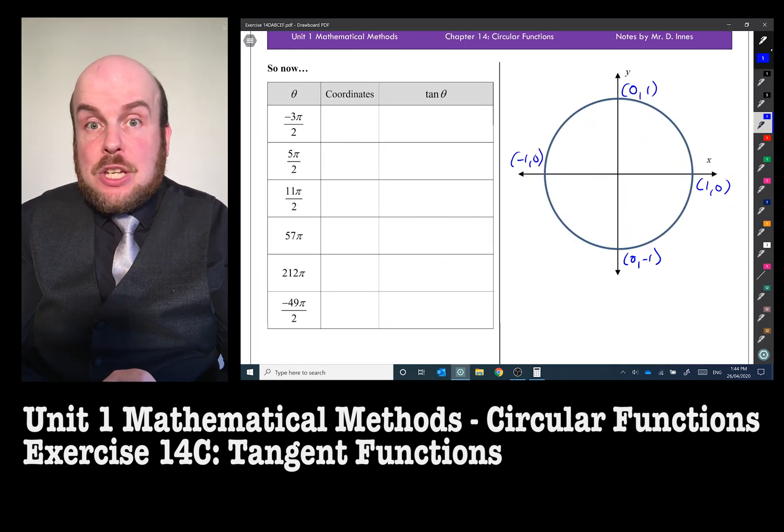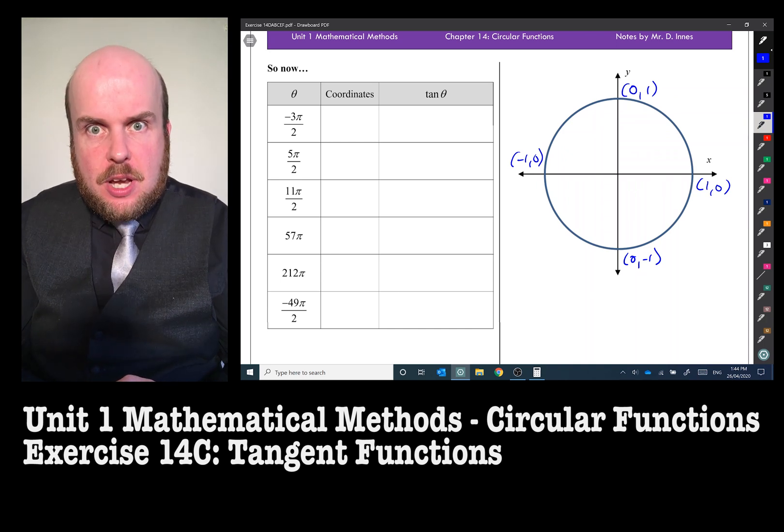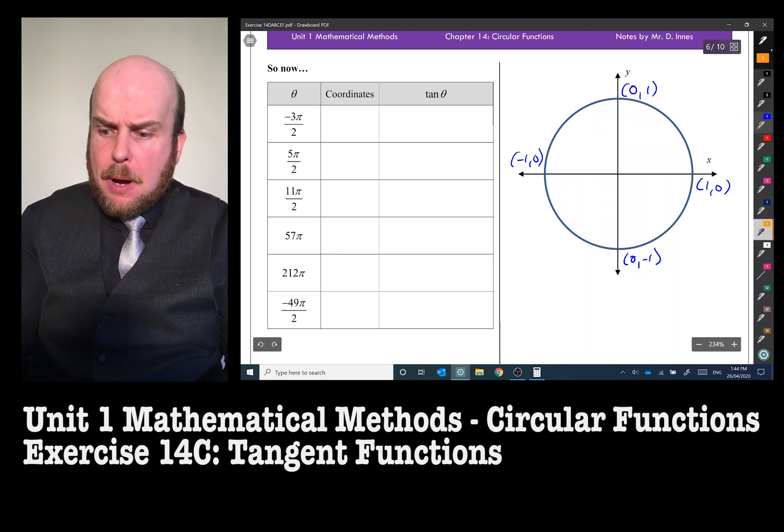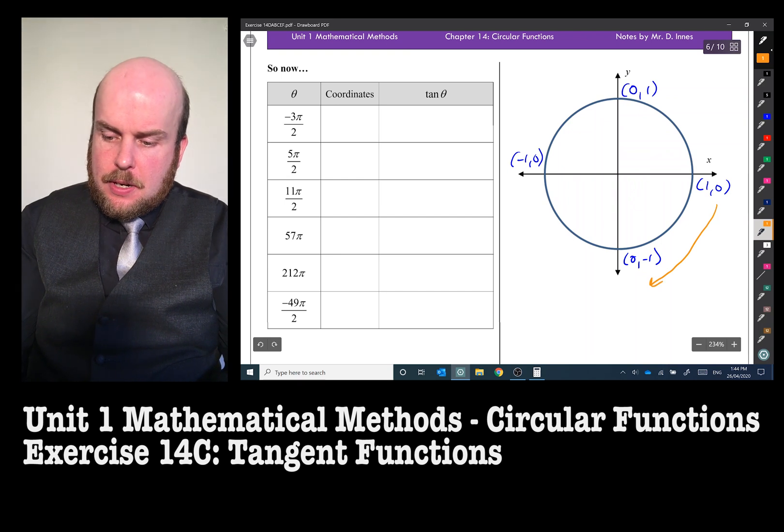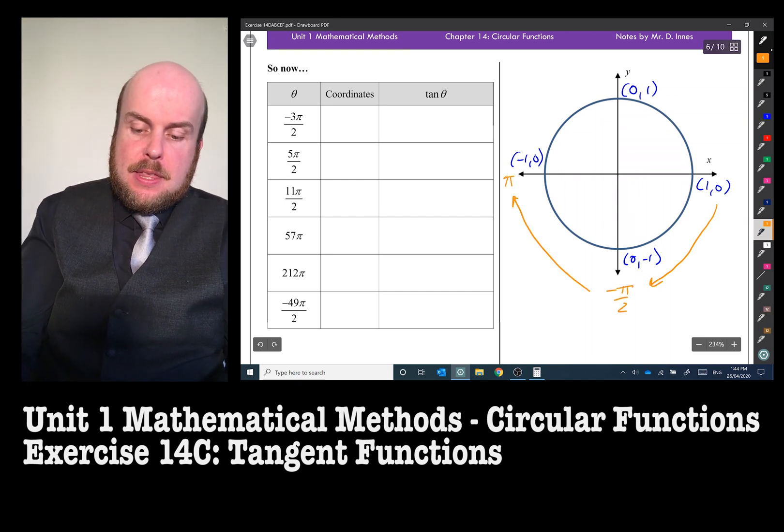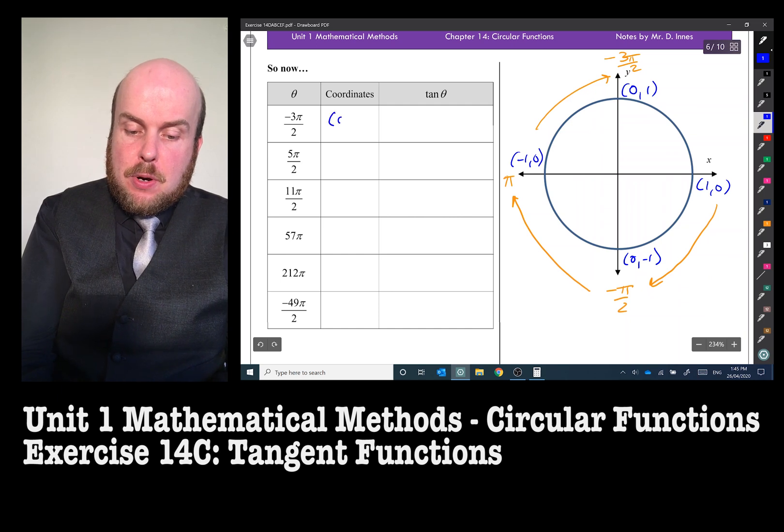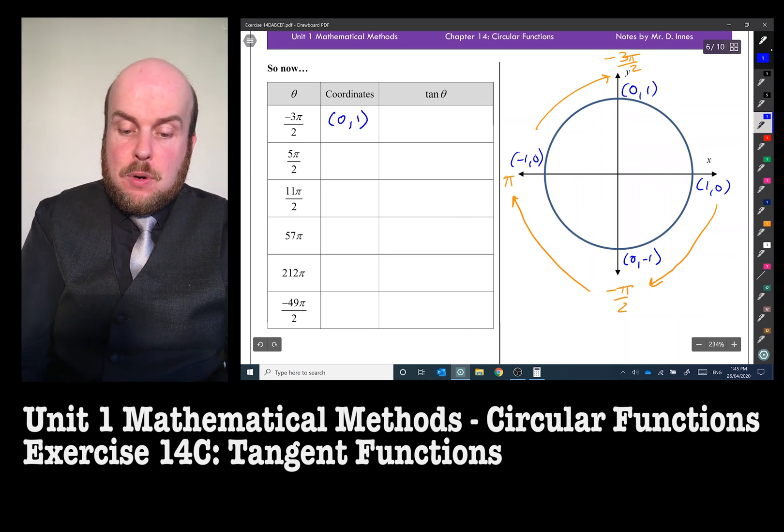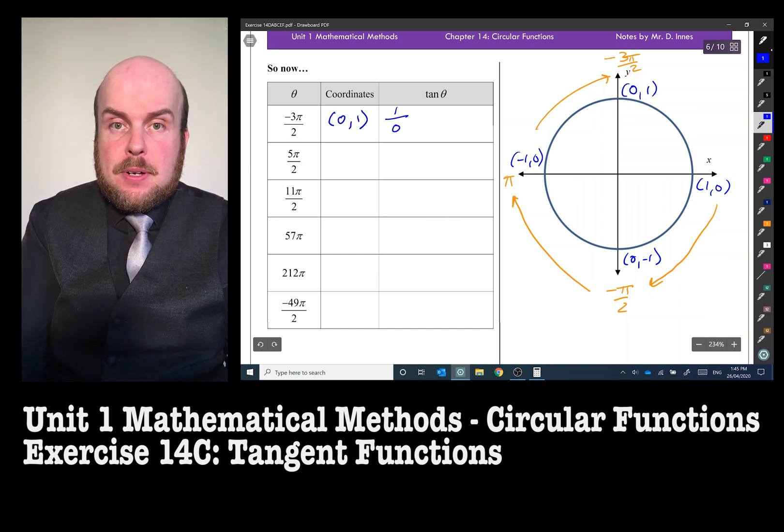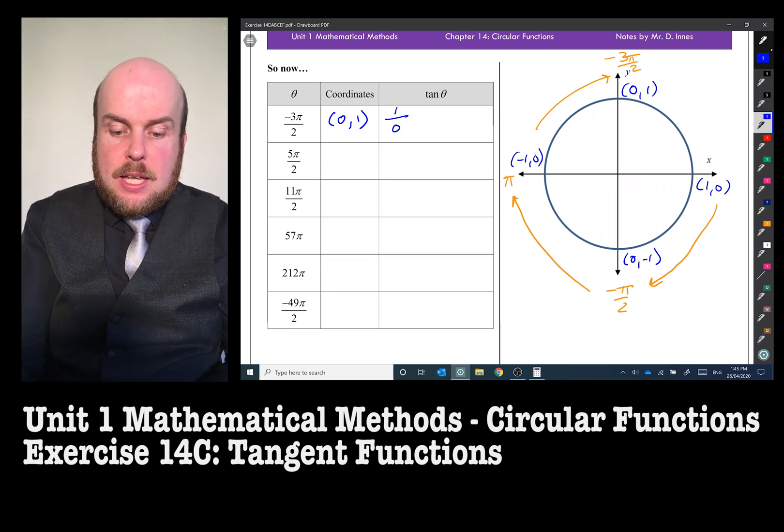Now that we've adequately warmed up, we can do some more challenging type questions. So negative 3π/2. If we go this way, this is negative π/2, this is π, so this would be negative 3π/2. My coordinates here are 0, 1. So therefore, 1 divided by 0, because it's going to be the sine value divided by the cos value there. And so that is undefined.